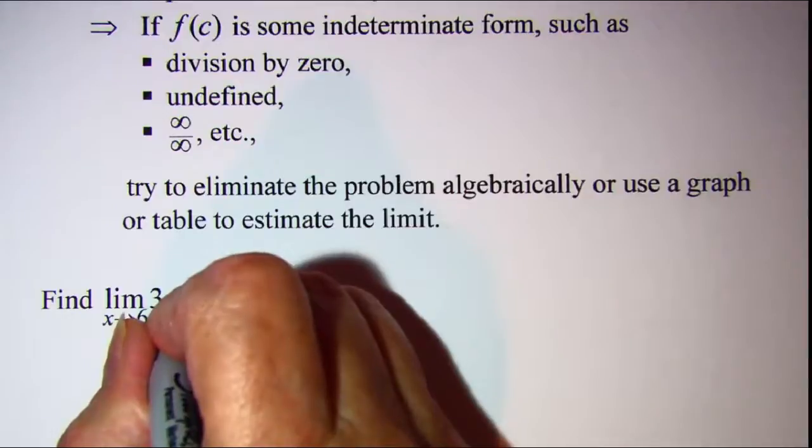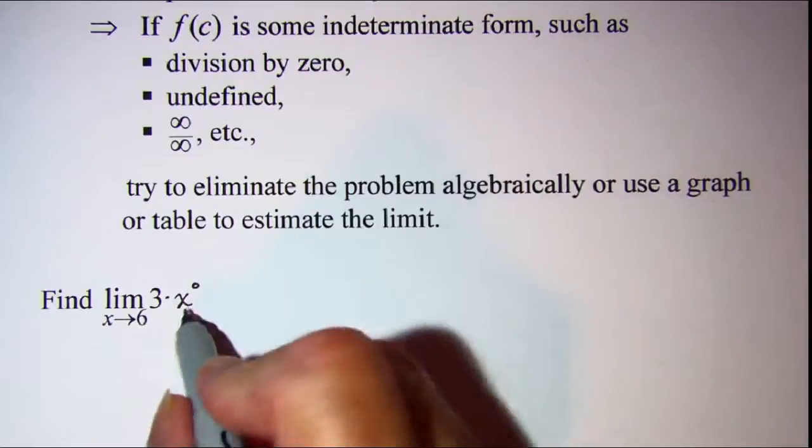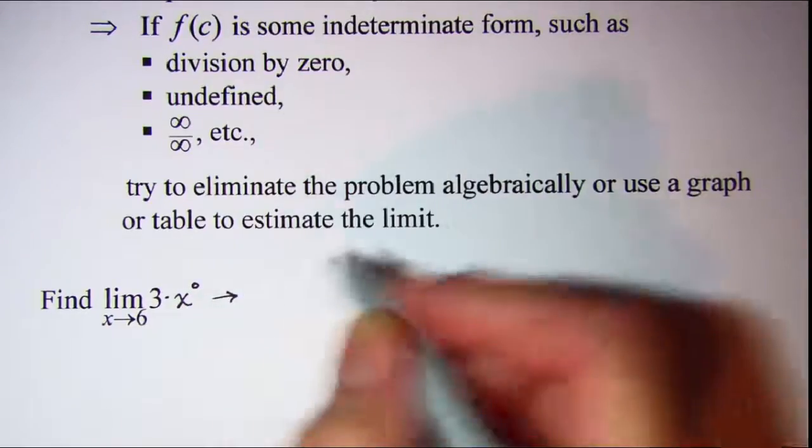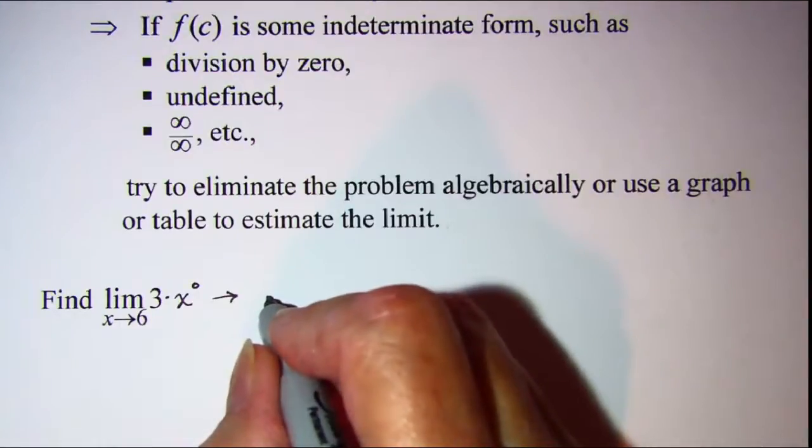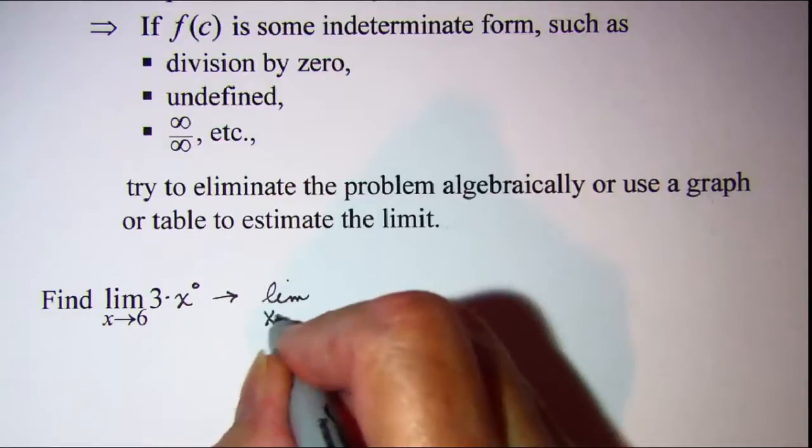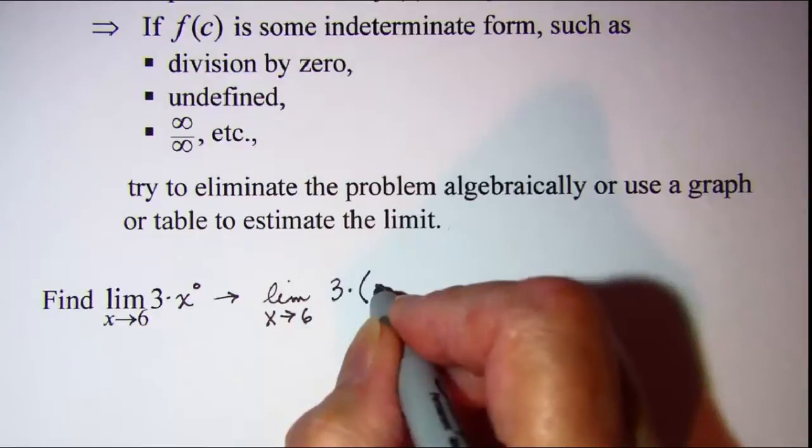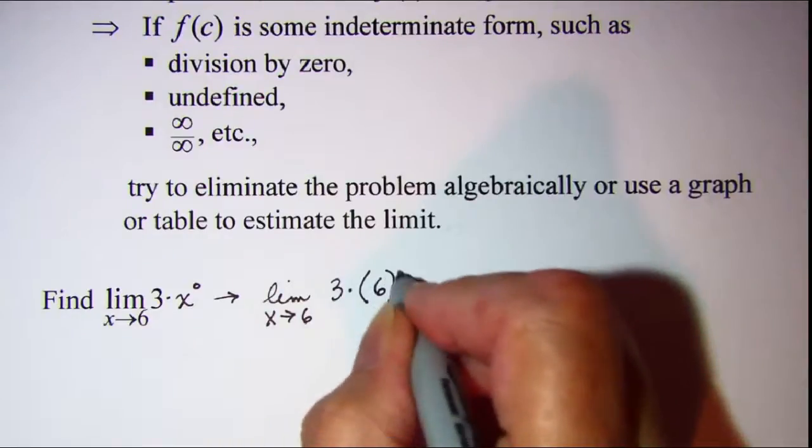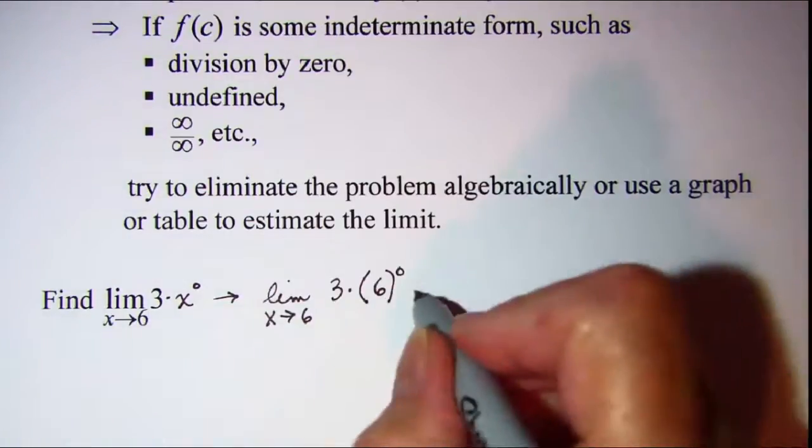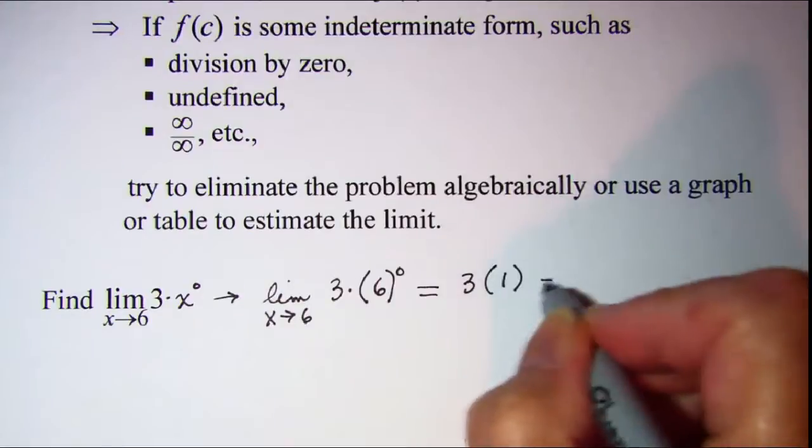So if we write this as 3 times x to the zero power, which we know is 1, then what we're actually finding is the limit as x approaches 6 of 3 times 6 to the zero power. Now 6 to the zero power is 1, so this is equal to 3 times 1, which is 3.